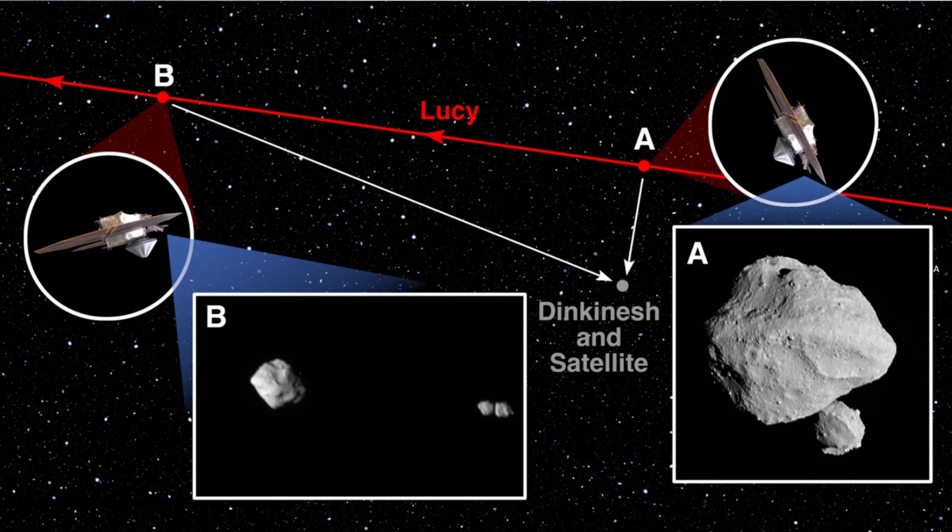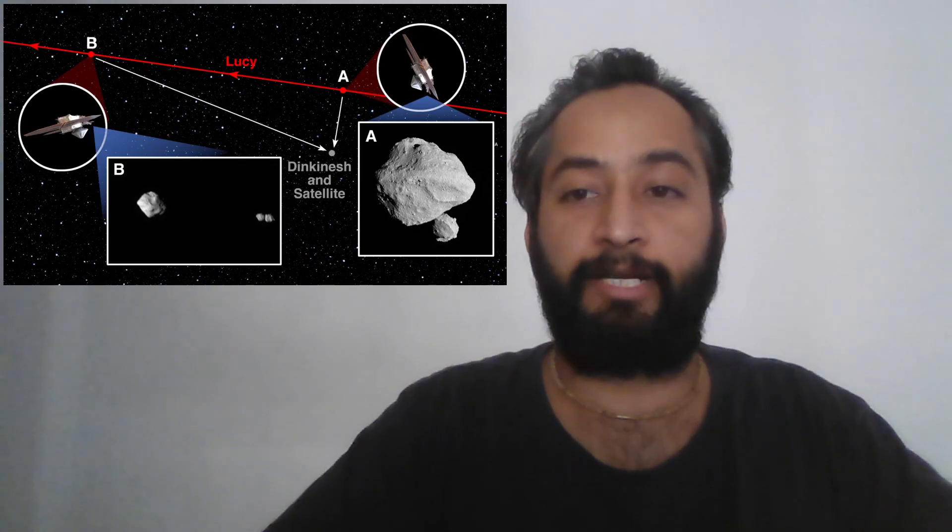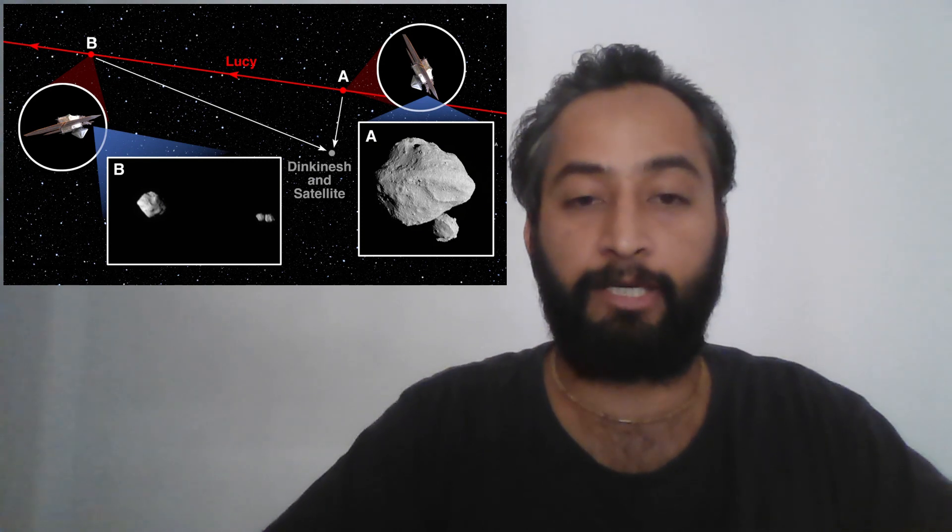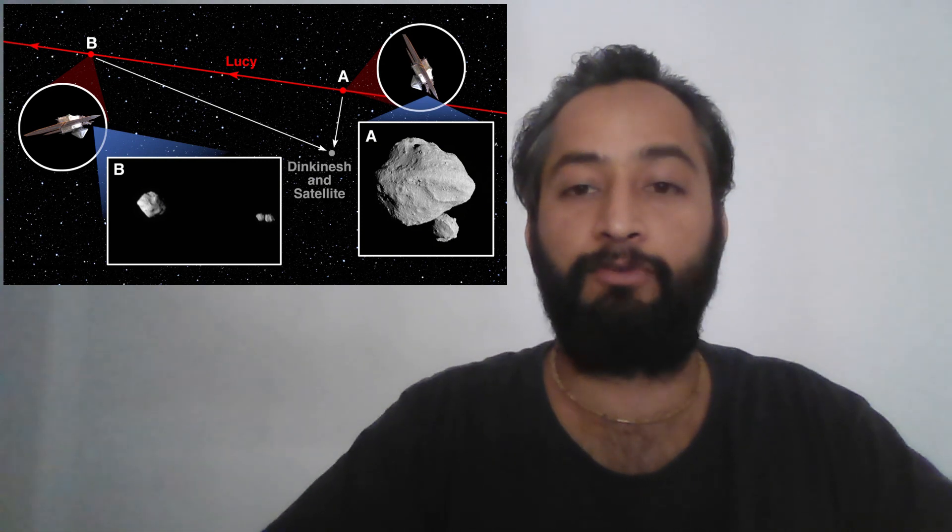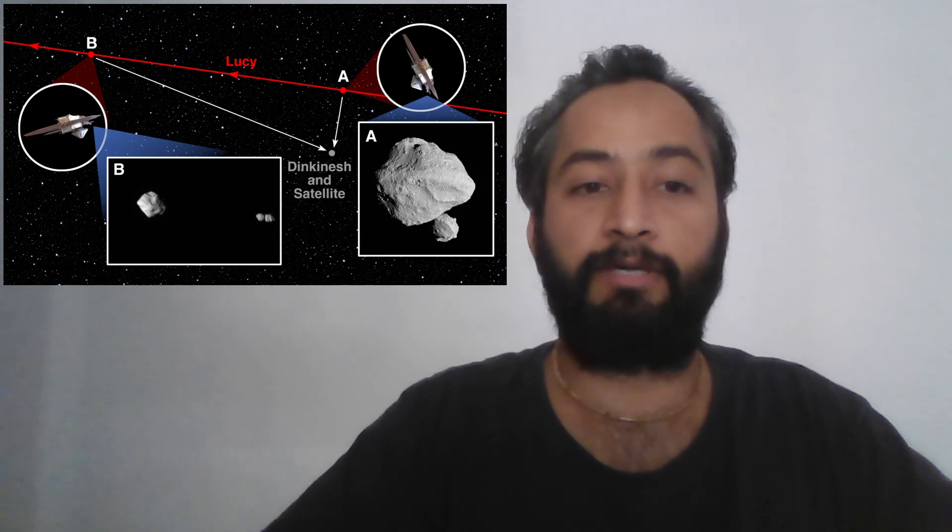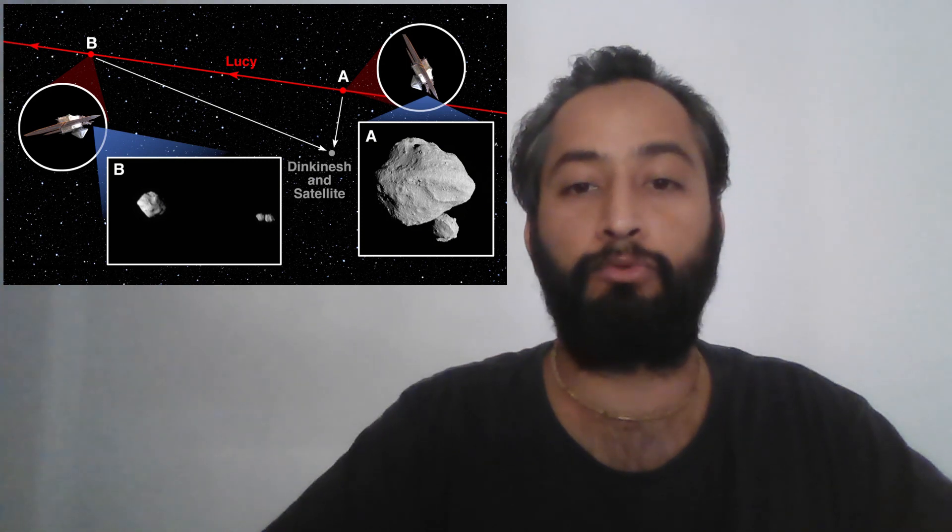In the first downlinked images of Dinkinesh and its satellite which were taken at closest approach, the two lobes of the contact binary happened to lie one behind the other from Lucy's point of view. Only when the team downlinked additional images captured in the minutes around the encounter was the true nature of this object revealed.